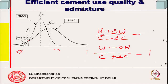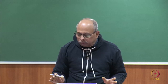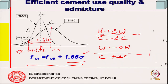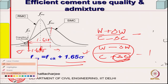Structural design is based on characteristic strength, which is the 95th percentile strength — the strength exceeded 95 percent of the time. We design our mix with respect to mean strength, given as fck + 1.65 × standard deviation. If standard deviation (σ) is higher, the required mean strength is higher, meaning lower water-cement ratio, more cement. So cement consumption increases if quality control is poor — quality has a clear role in cement consumption.